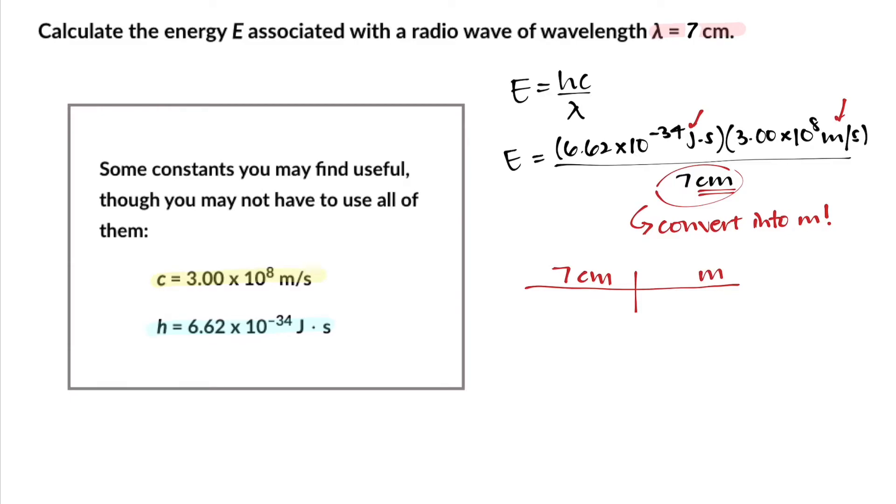You want to convert centimeters into meters, which is why meters goes on the top right corner of this train track. Now what is the relationship between centimeters and meters? One meter is equal to 100 centimeters.